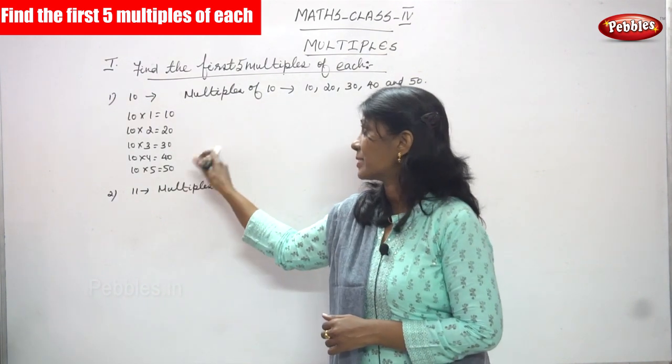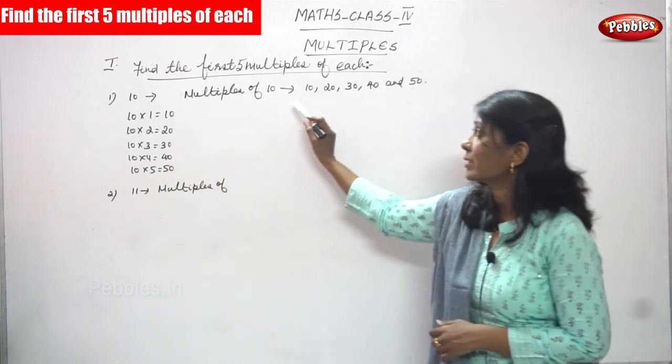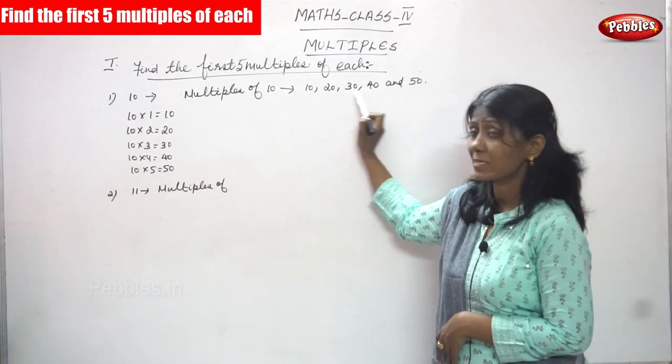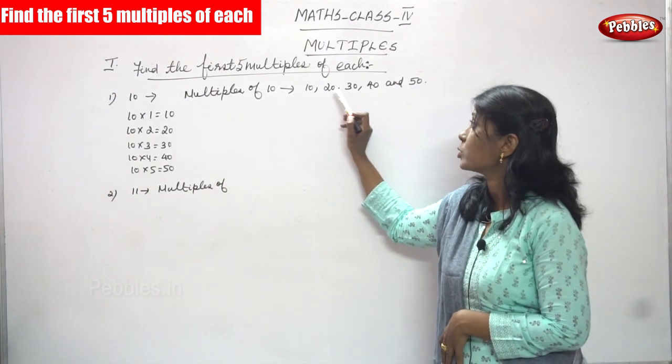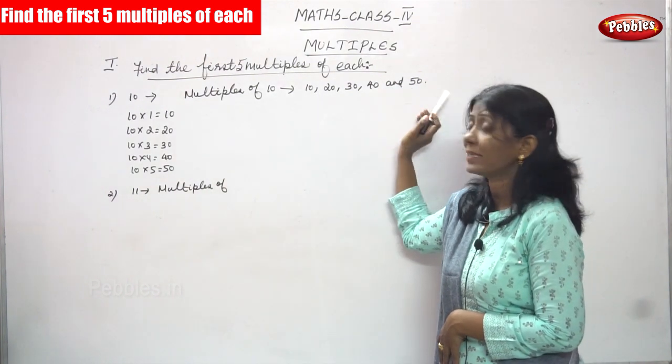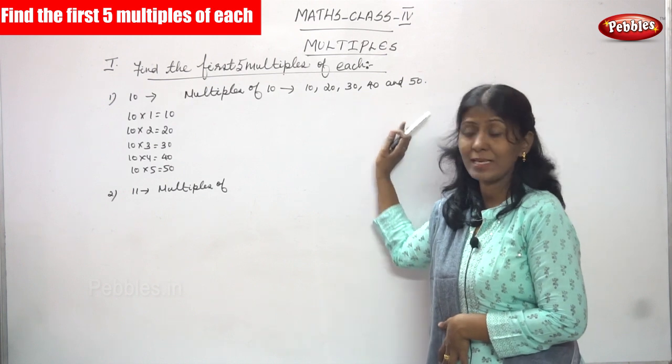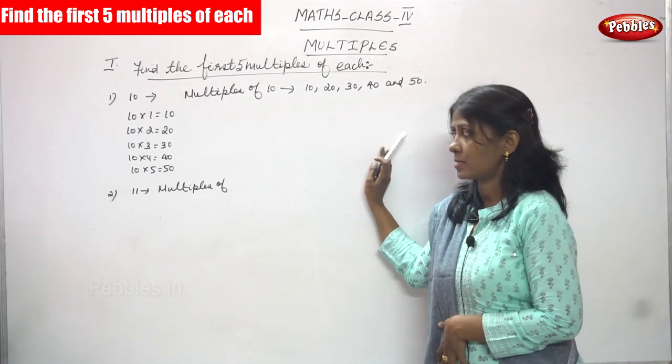So these are the first 5 multiples. That is what I have written the answers here. Multiples of 10 are equal to 10, 20, 30, 40, and 50. This is the answer.